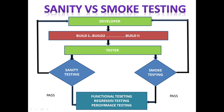Smoke testing checks the critical functionality of the application. In sanity we check the core or basic functionality, but in smoke testing we check the critical functionality. If a particular problem or defect is found, as a tester you try to find the root cause — why this particular problem occurred — and that comes under smoke testing.